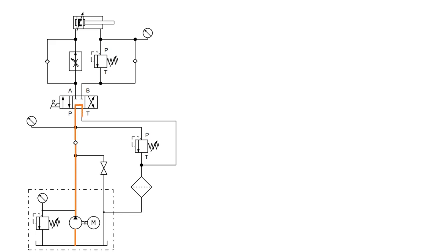In the central position, as you can see, all the ports are blocked and the fluid will flow from port P to port T. From port P it will enter into port T because all the other ports are blocked. The pump pumps the fluid driven by the motor, and through this check valve — which is in the normally open or free flow position — from port P it enters port T. Then through the strainer it goes back to the reservoir.